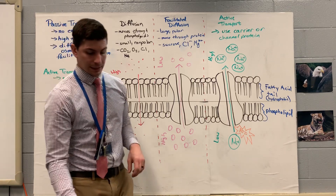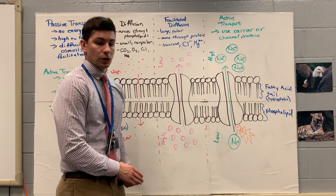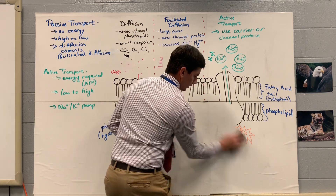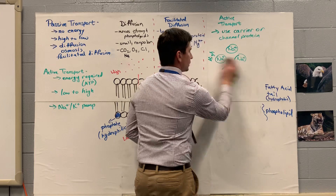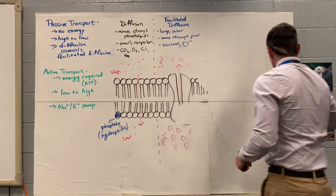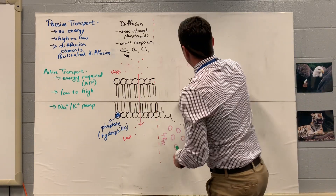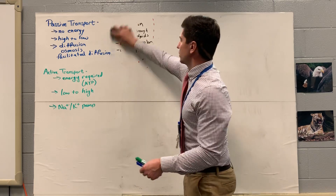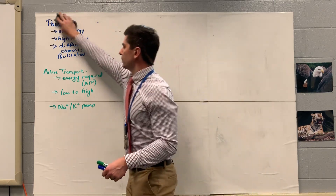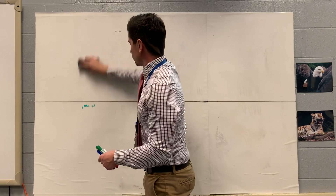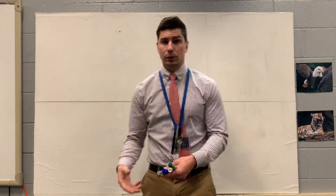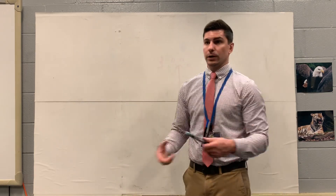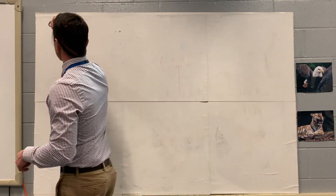That's pretty much everything with the main types of transport, guys. The last one we've got to go over is osmosis. For osmosis, our main thing is that we're going to be moving water instead of our sodium particles. This is because maybe the sodium particles are too big to pass the cell membrane. So in this instance, we're going to be moving our solvent. This is osmosis.